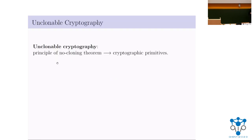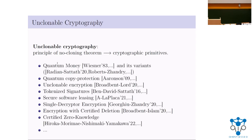Unclonable Encryption comes under the umbrella of a research area called Unclonable Cryptography, which primarily deals with leveraging the principle of no-cloning to build very interesting cryptographic primitives. There are many interesting cryptographic primitives under Unclonable Cryptography, the most popular one being Quantum Money, which shows how to associate digital money with quantum states in such a way that these states cannot be cloned.